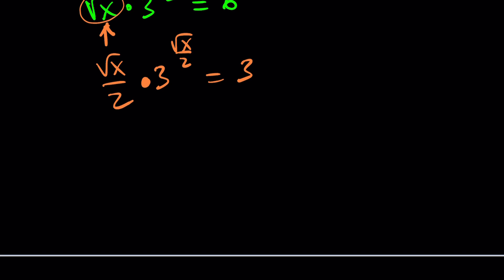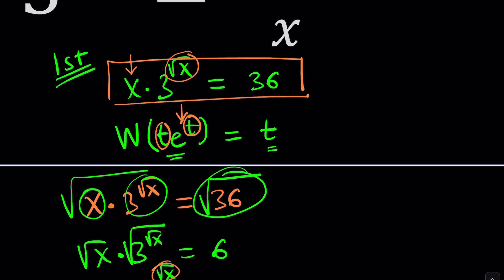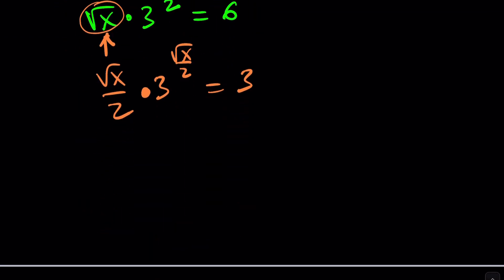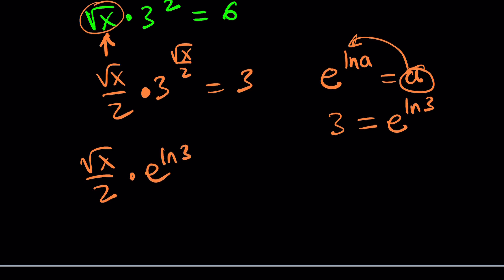Next thing we're going to do is fix the base. The 3 is the base, but we want e to be the base. How do I go from 3 to e? Easy — e to the power ln(a) is a. So if you start with some number 3, then 3 can be written as e to the power ln(3). Now we can write: square root of x divided by 2 times 3, which is e to the power ln(3), and then raise it to the power square root of x divided by 2 equals 3.